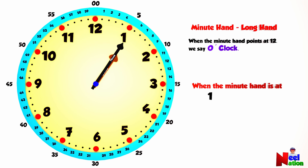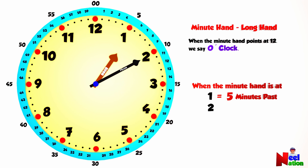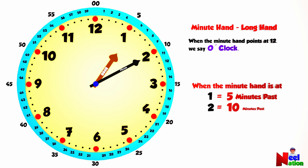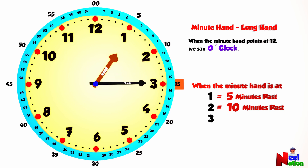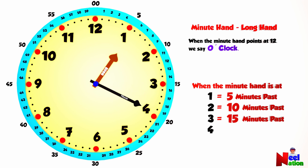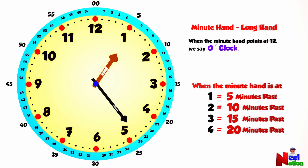When the minute hand points at 1, we say 5 minutes past, as it has moved from 0 to 5. When the minute hand moves to 2, we skip count by 5 and say 10 minutes past. When the minute hand points to 3, we say 15 minutes past — 10 plus 5 makes 15, or 3 times 5 makes 15. When the hand points at 4, we say 20 minutes past. When the hand is at 5, we say 25 minutes past.